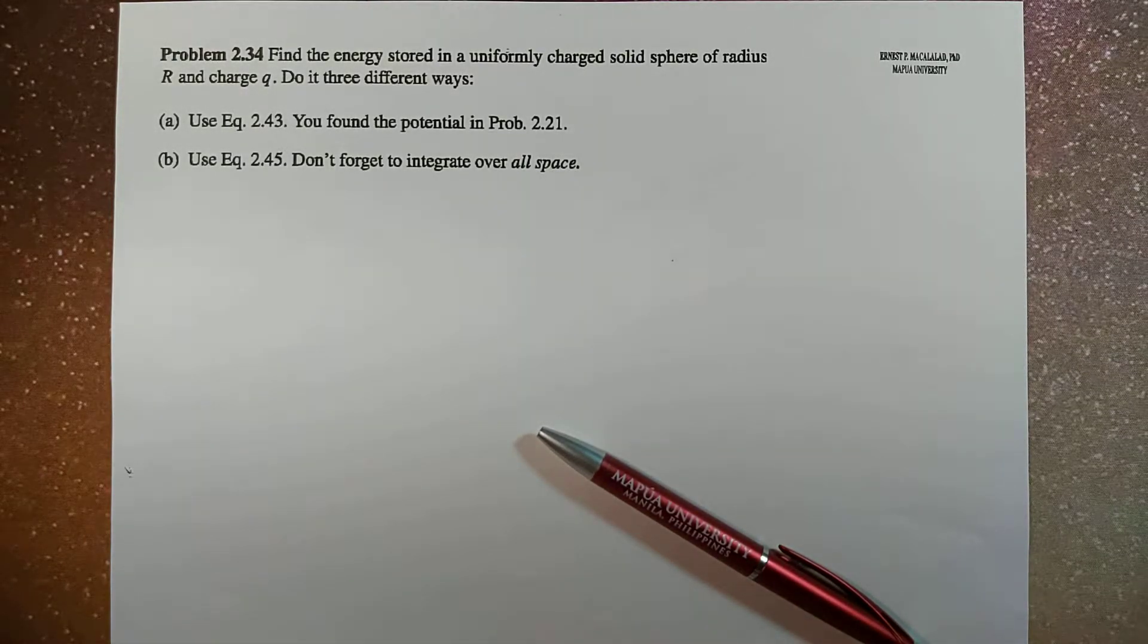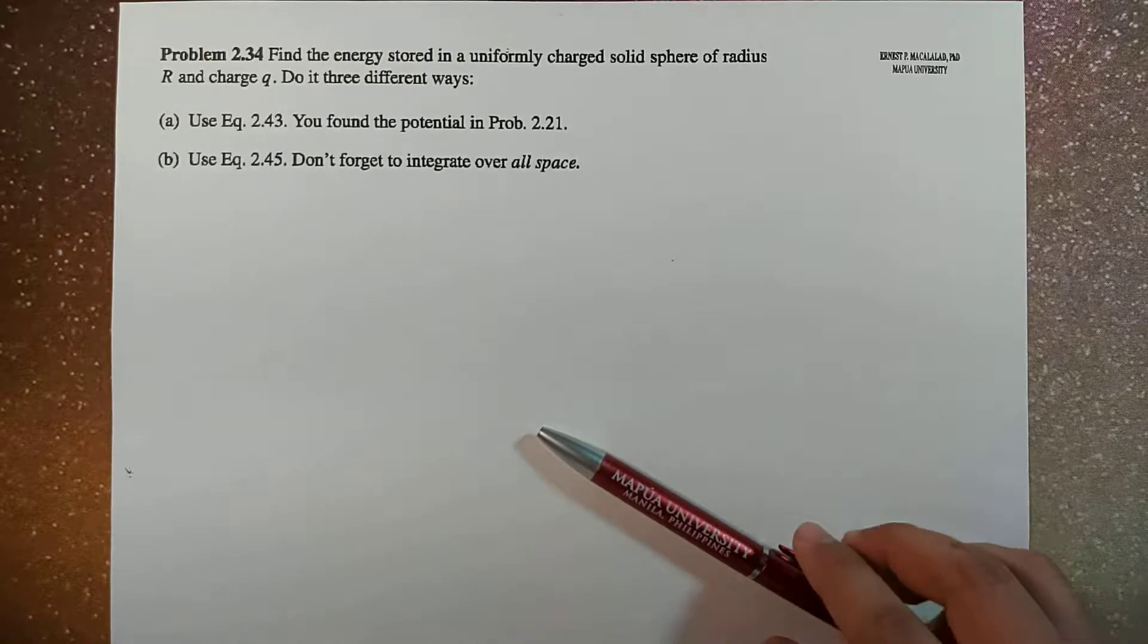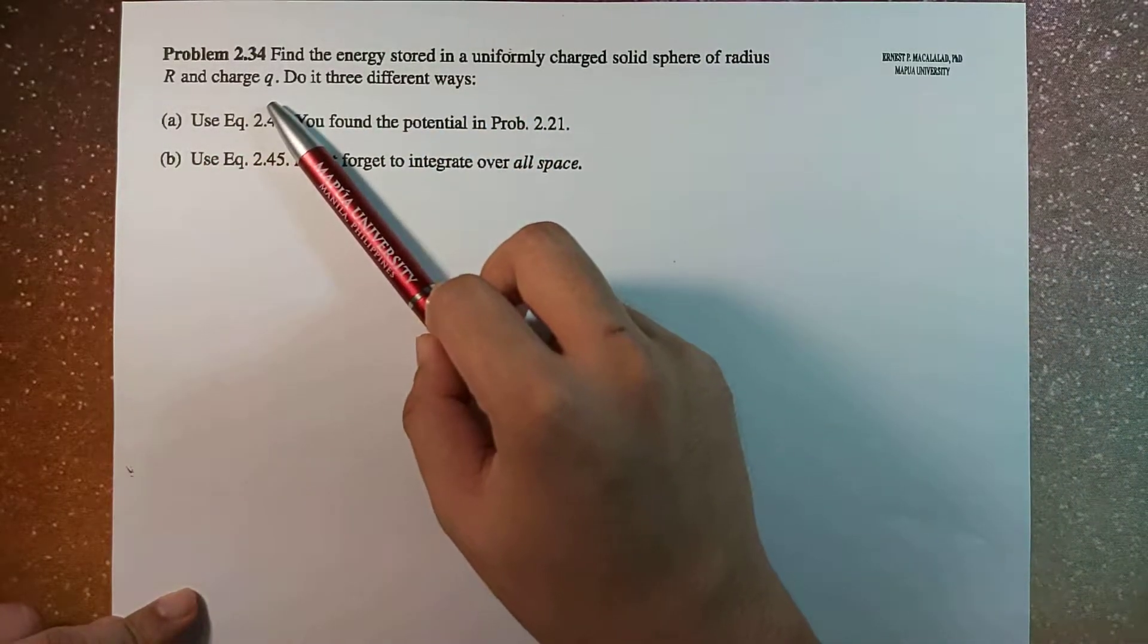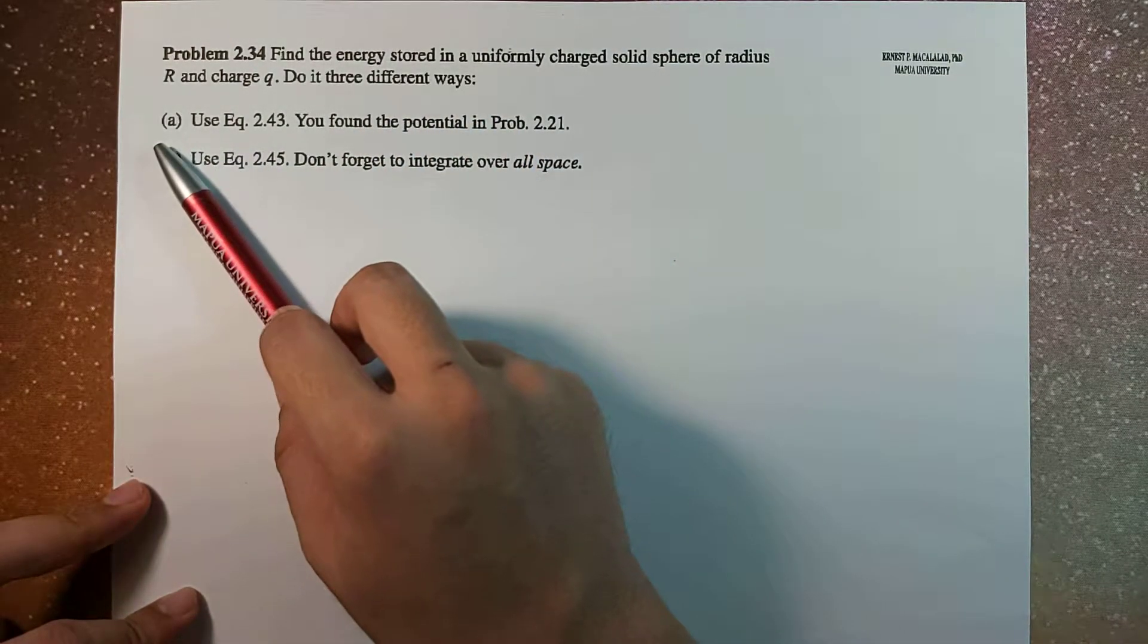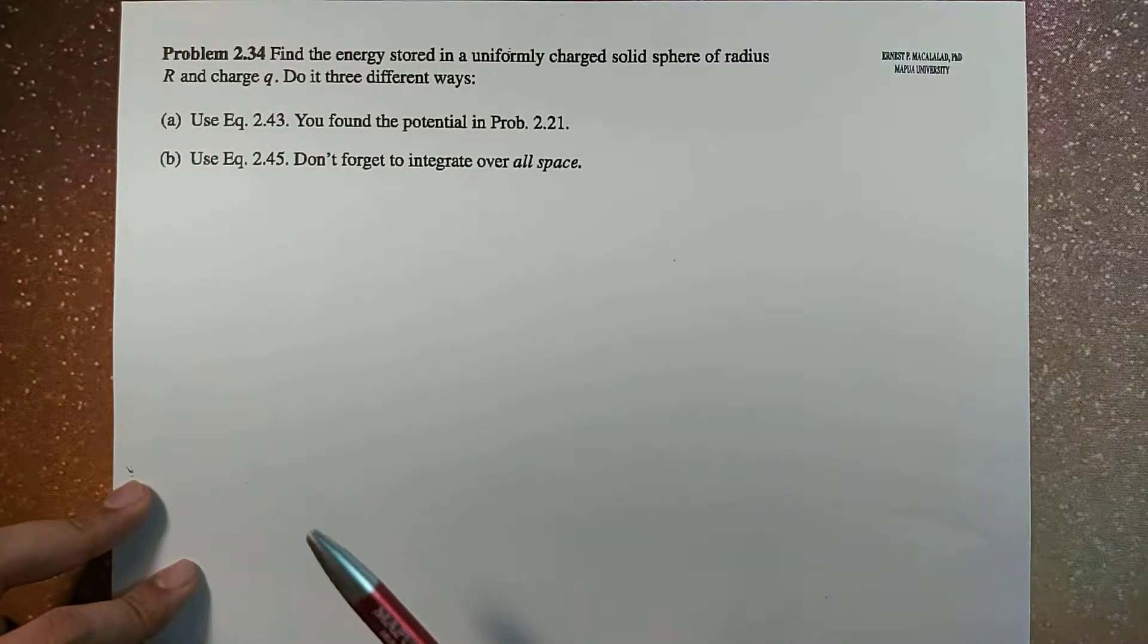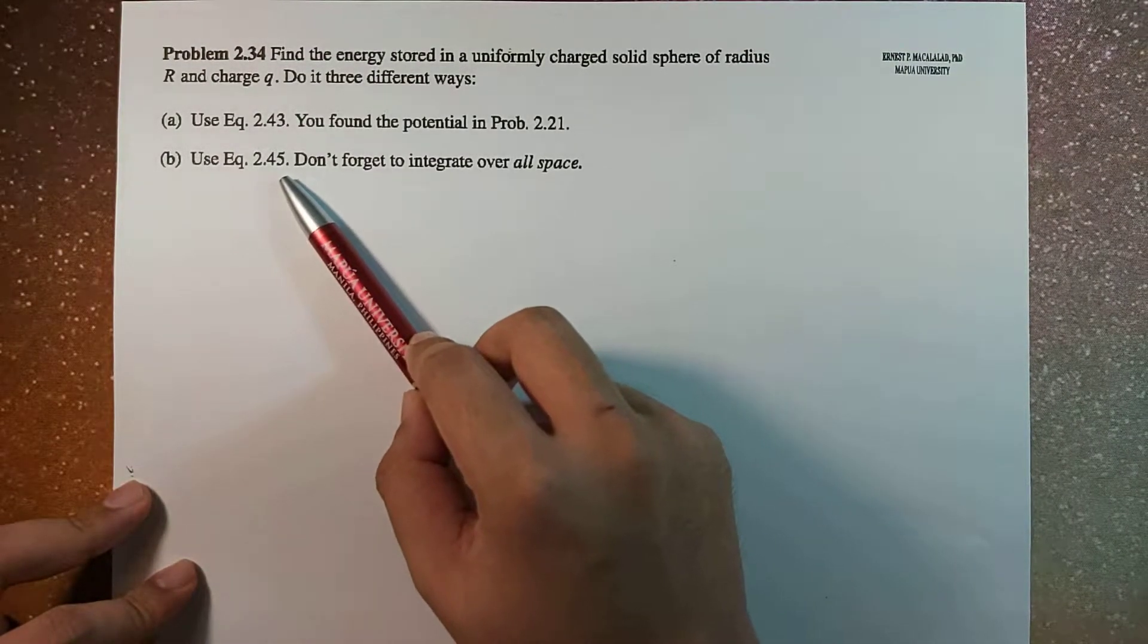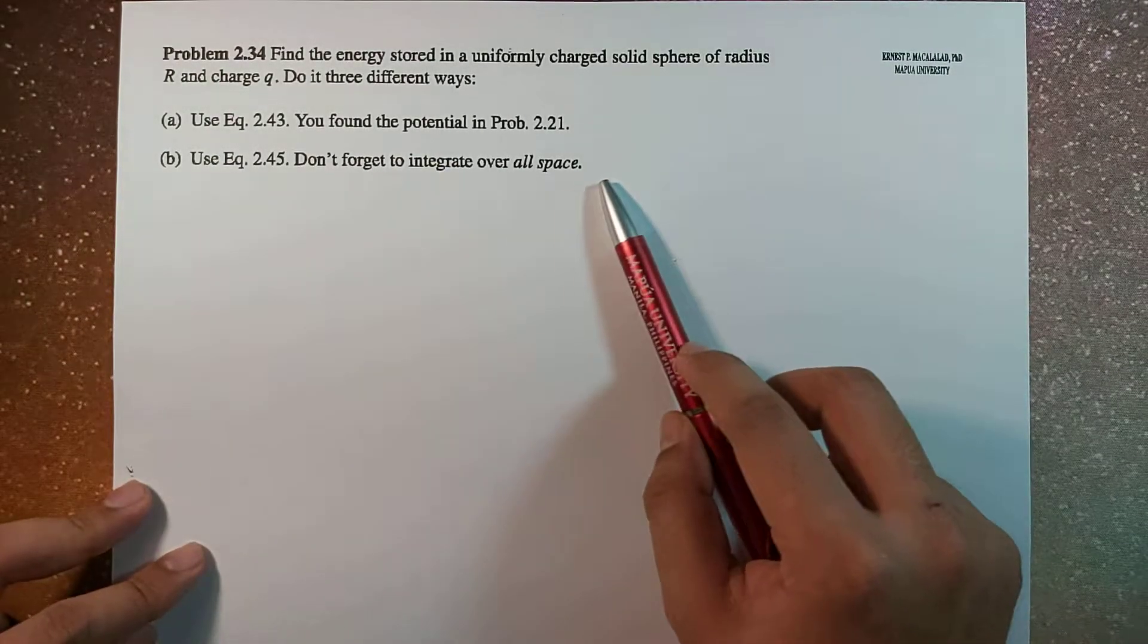Hi guys, it's me again, Sir Ernest, and today we're going to continue solving problem 2.34 of Griffith's fourth edition. The problem reads: find the energy stored in a uniformly charged solid sphere of radius R and charge Q, and we're going to do it in three different ways. So previously we already solved problem A, and in this video we're going to use the second method, wherein we're going to use equation 2.45, and the integration is for all space.